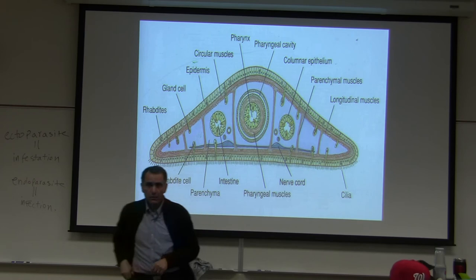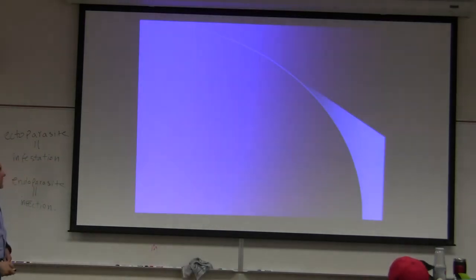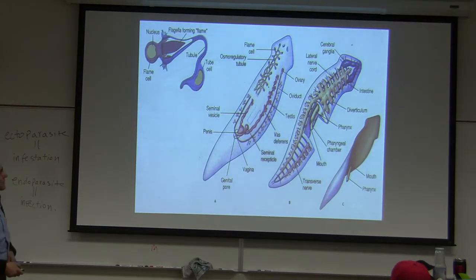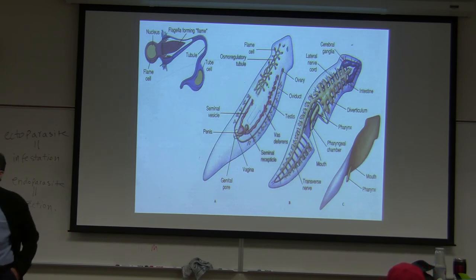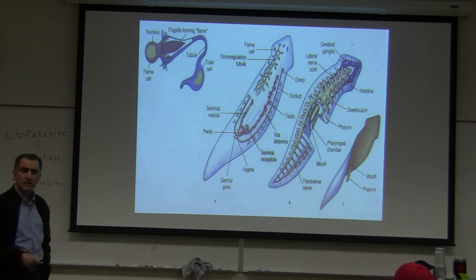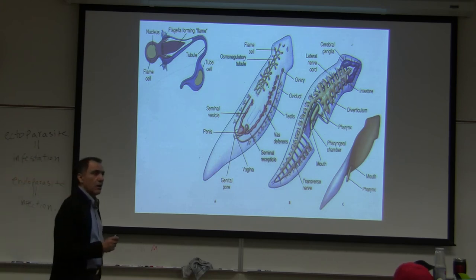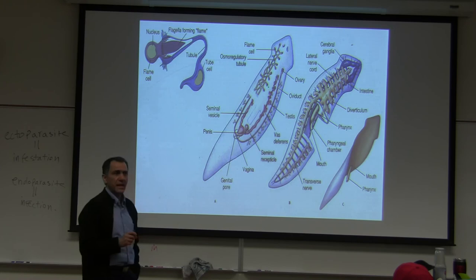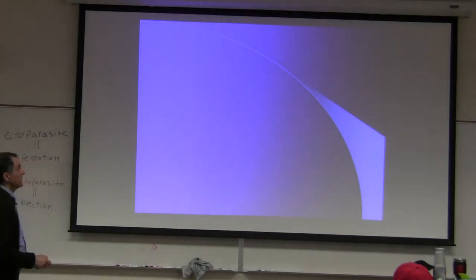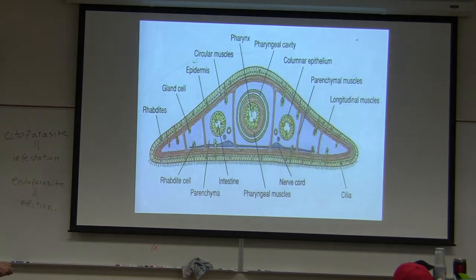Let's go find cerebral ganglion, right here. The picture from your textbook calls it cerebral ganglion, and not brain. Brain analyzes information. These animals are more primitive than animals that can actually analyze information.